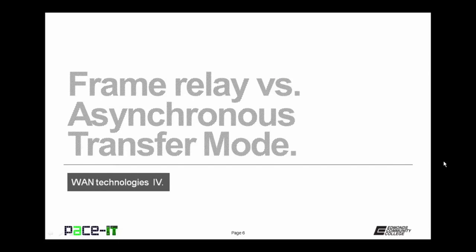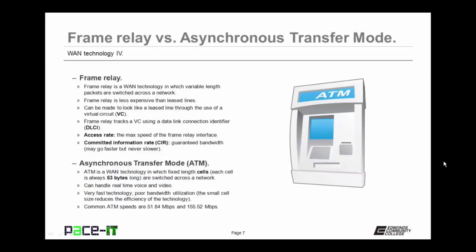Now let's talk about the differences between frame relay and asynchronous transfer mode. Frame relay is a WAN technology in which variable-length packets are switched across a network. Frame relay is less expensive than leased lines, but can be made to look like a leased line through virtual circuits, or VCs. A frame relay network will track a VC using a data link connection identifier to identify the ends of the VC. The first term to know is access rate — the maximum speed of the frame relay interface. The other is the committed information rate, or CIR — the guaranteed bandwidth a customer receives, i.e., the minimum speed of the frame relay network.